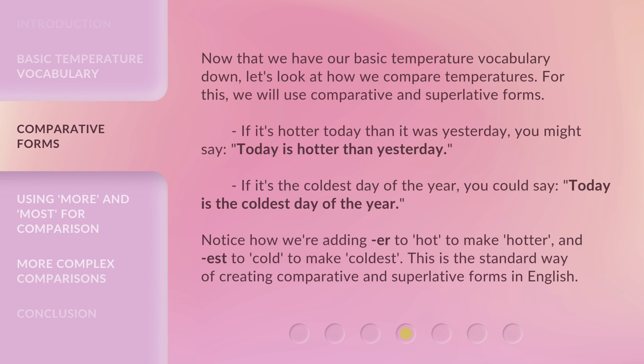Now that we have our basic temperature vocabulary down, let's look at how we compare temperatures. For this, we will use comparative and superlative forms. If it's hotter today than it was yesterday, you might say, "Today is hotter than yesterday." If it's the coldest day of the year, you could say, "Today is the coldest day of the year." Notice how we're adding -er to hot to make hotter, and -est to cold to make coldest. This is the standard way of creating comparative and superlative forms in English.